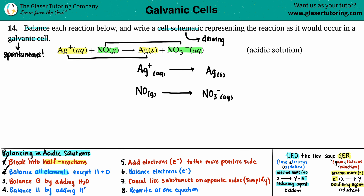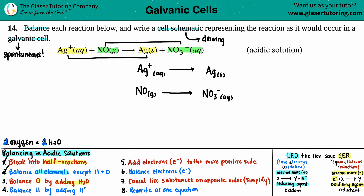Step three: balance oxygens by adding H₂O. The rule is one oxygen needed equals one H₂O added. The top reaction has no oxygens on either side, so nothing to do there. The bottom reaction has one oxygen on the left and three on the right, so we need two more on the left: add 2H₂O to the left side.